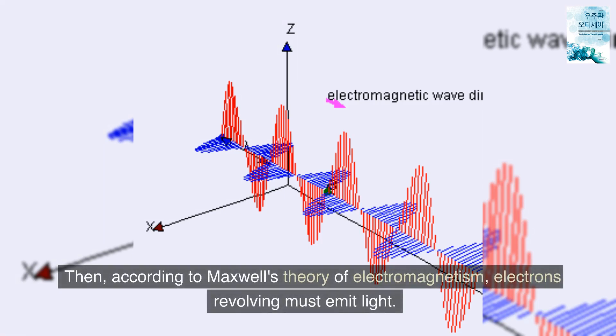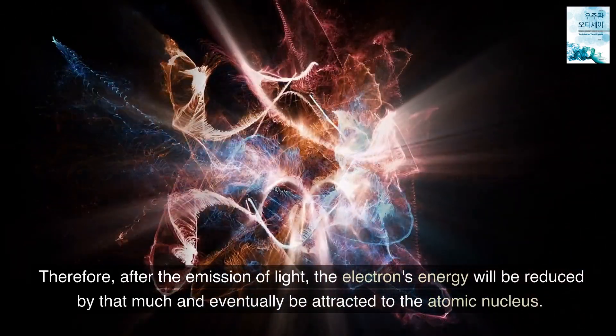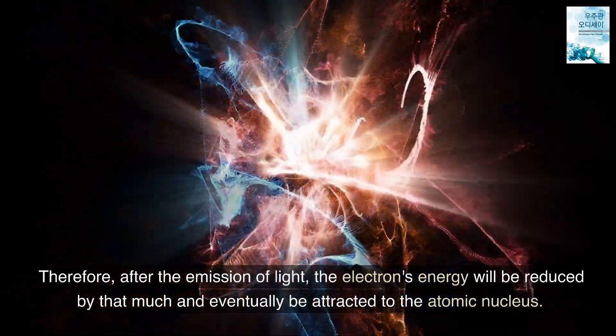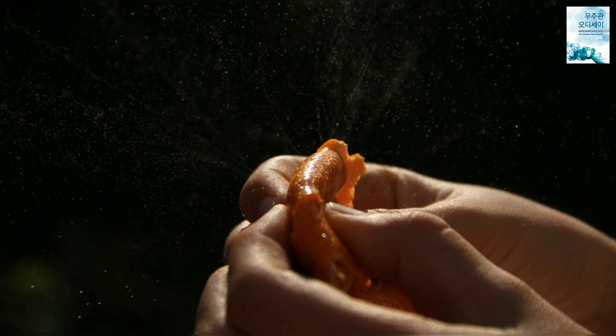It seemed clear that electrons were orbiting around the nucleus. Then, according to Maxwell's theory of electromagnetism, electrons revolving must emit light. Therefore, after the emission of light, the electrons' energy will be reduced by that much and eventually be attracted to the atomic nucleus. Even in this case, the atoms must be squeezed. But the reality was not like that.